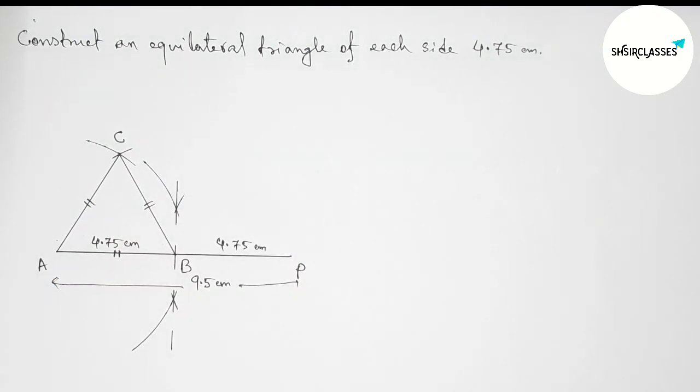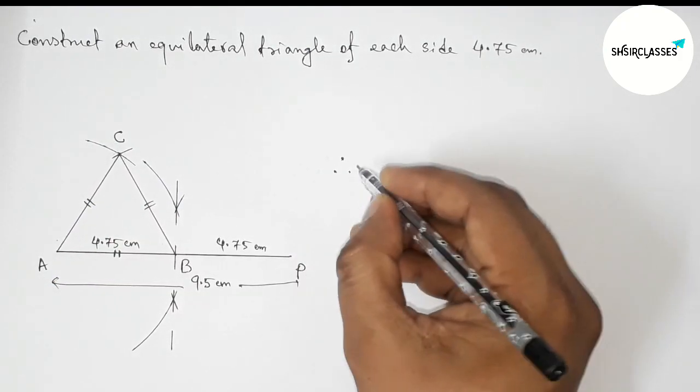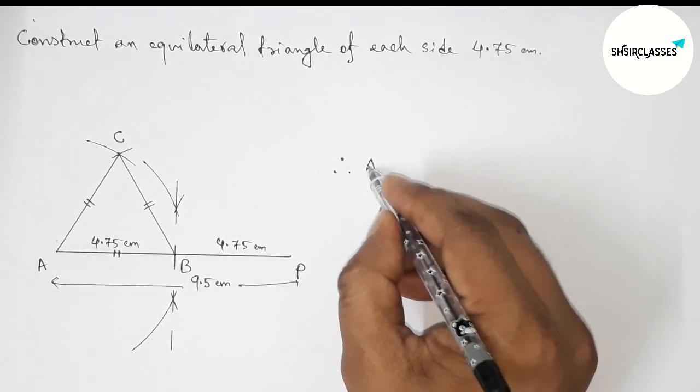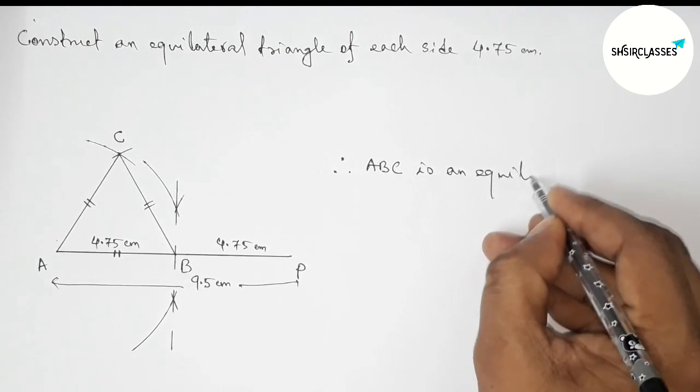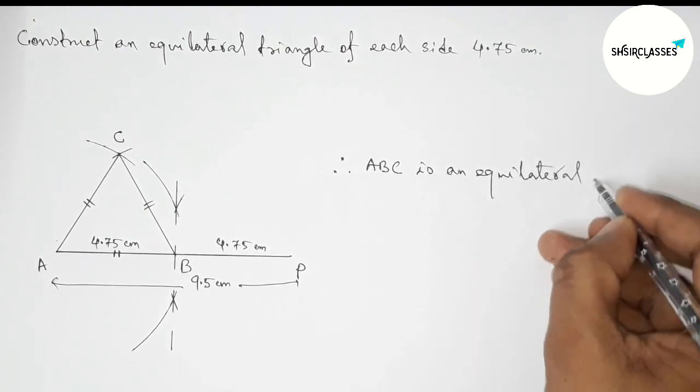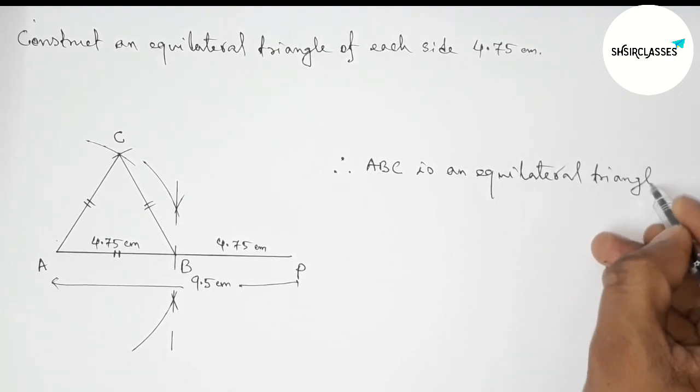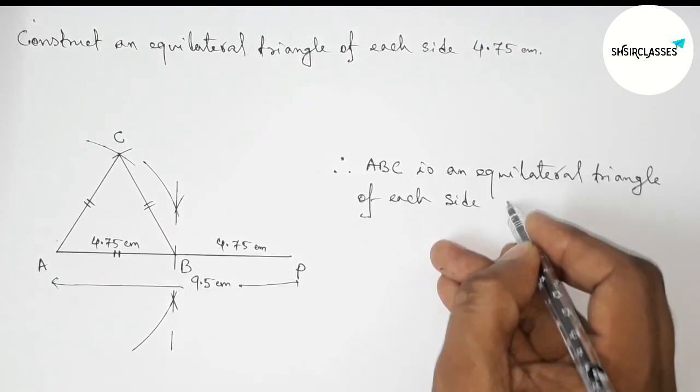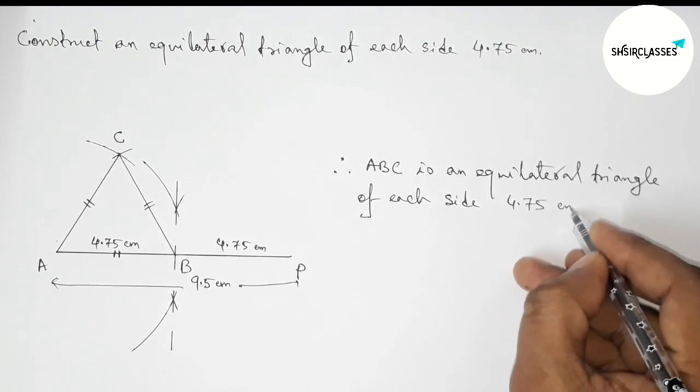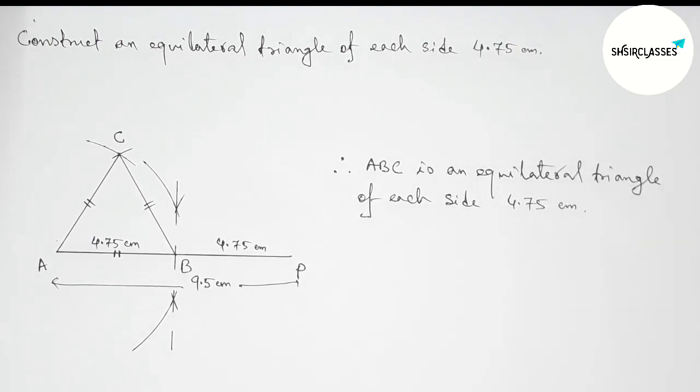So therefore, ABC is an equilateral triangle of each side 4.75 centimeters. So by this way you can construct this equilateral triangle. That's all, thanks for watching. If this video is helpful to you, then please share it with your friends.